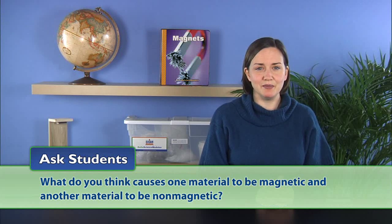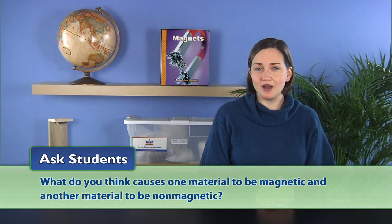Finally, ask students, what do you think causes one material to be magnetic and another material to be non-magnetic? Accept all responses to this question and give students plenty of time to discuss them. Then explain that it has to do with the way the atoms inside the material either align or do not align when brought near a magnet's force.